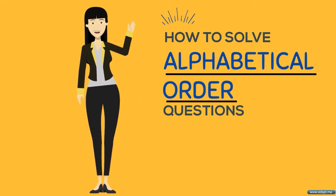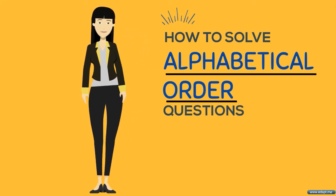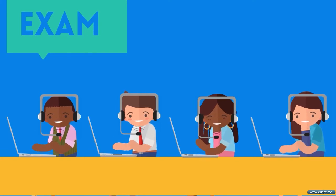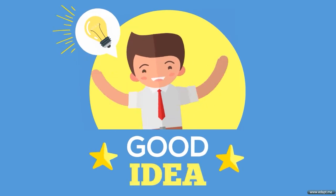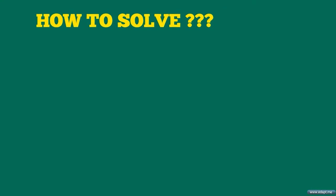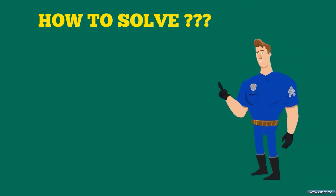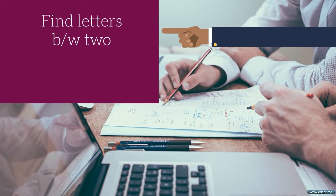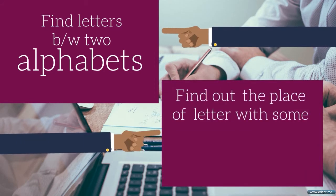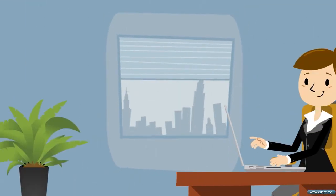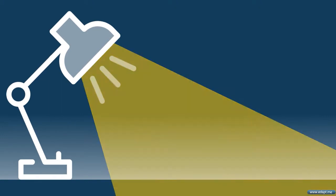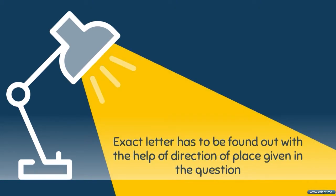Welcome. In the reasoning section of every competitive exam, questions from the topic alphabetical order are considered quite important, and every year a good number of questions are asked from these topics. We will discuss the basic concepts and tricks for the alphabet test. The basic concept you need to know is the alphabetical order and the place value of letters. Questions may ask you to find the English letter between two alphabets or to find the place of a letter with some relation.